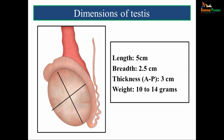This can be asked as a short note question during your examinations. Now we come to the testis itself. The dimensions of the testis: length is about 5 centimeters, breadth is about 2.5 centimeters, and the anteroposterior thickness is about 3 centimeters. In an adult, the testis weighs about 10 to 14 grams.